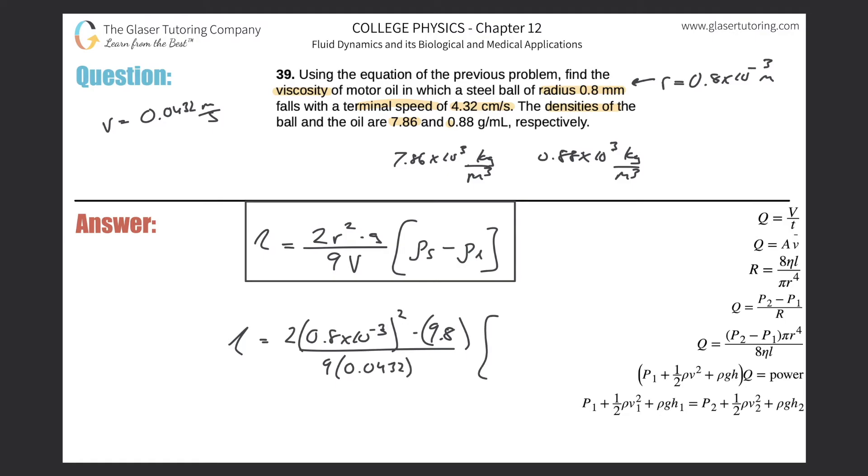Then divided by 9, now multiplied by the terminal velocity. Here is 0.0432. Then multiplied by the difference between these two densities, the solid, which is essentially 7,860. So I'm going to plug that in 7,860 just to make it look nicer. And this is essentially 880.